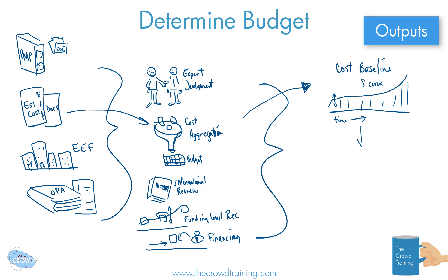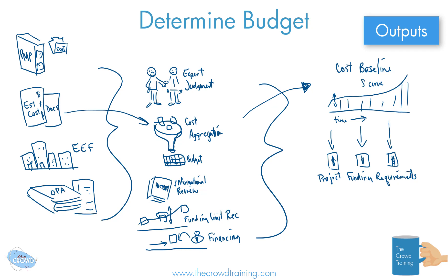Also based on this, we can take the plans and the baseline and figure out when and how we should expect or need to have the various different funds allocated to the project. We might look at what are those requirements — the requirements for funding of the project — and that all together is your project funding requirements as an output.